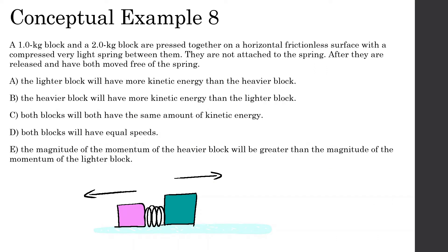Let's look at this. A 1kg block and 2kg block are pressed together on a horizontal frictionless surface with a compressed light spring between them. They are not attached to the spring. After they are released, they both move free from the spring. So we want to know what's true. A: the lighter block will have more kinetic energy than the heavier block. B: the heavier block will have more kinetic energy than the lighter block. C: both blocks will have the same amount of kinetic energy. D: both blocks will have equal speeds. E: the magnitude of the momentum of the heavy block will be greater than the magnitude of the momentum of the lighter block.